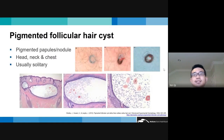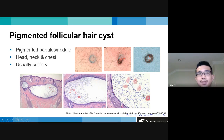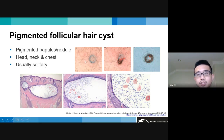Pigmented follicular cysts are very similar, presenting as pigmented papules or nodules with a predilection for the head, neck, and chest — usually solitary compared to vellus hair cysts. Histologically, they have stratified squamous epithelium with retention of the granular layer, but within the cyst, instead of vellus hairs, there are multiple pigmented hairs. A case report demonstrated a dark brown nodule that, when evacuated, revealed a coil of terminal hair.